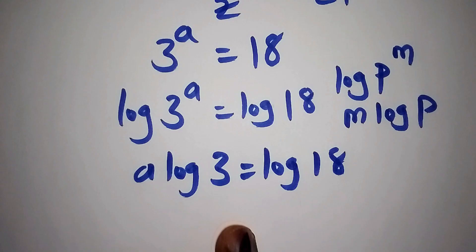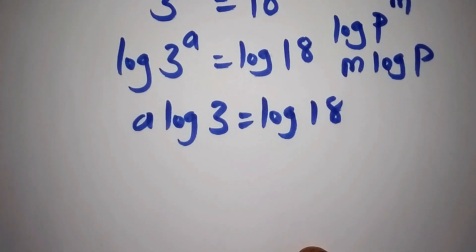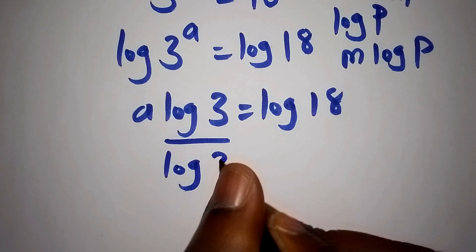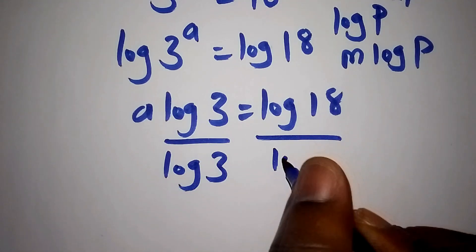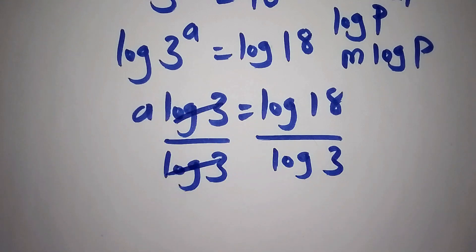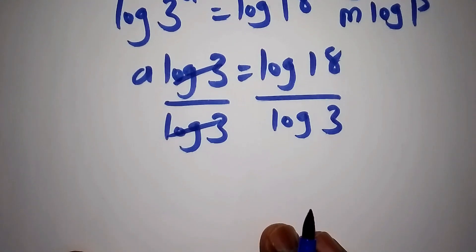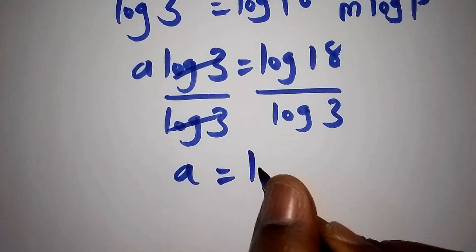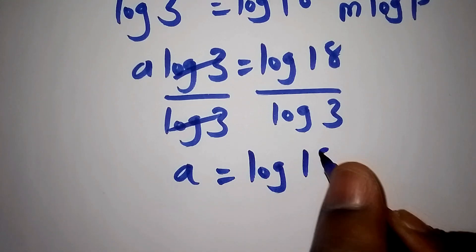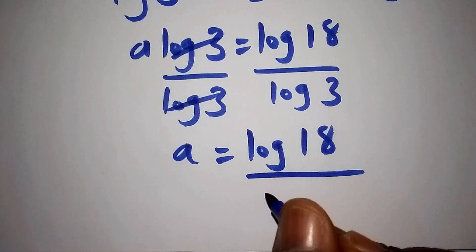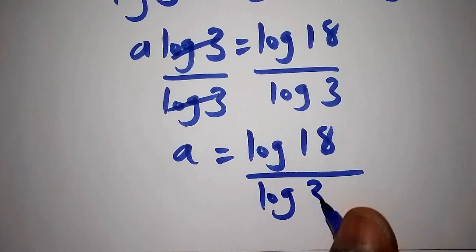From here we divide both sides by log of 3. The log of 3 terms cancel, so our value for a is equals to log of 18 all over log of 3.